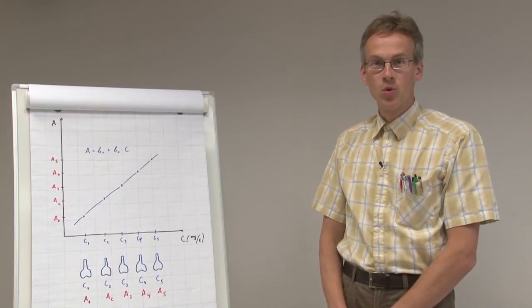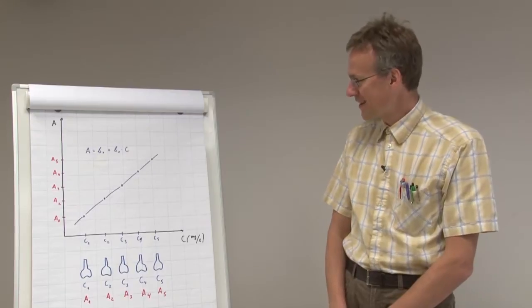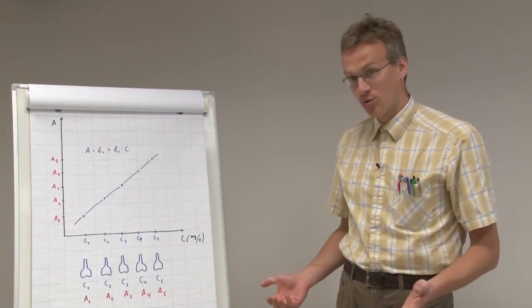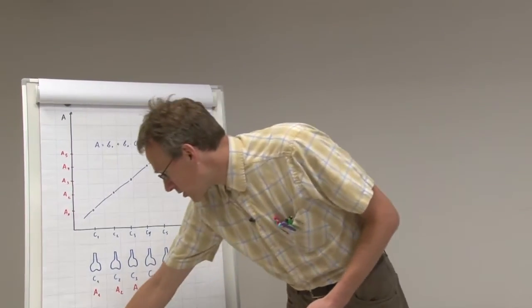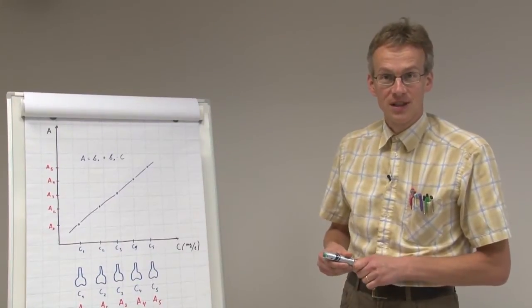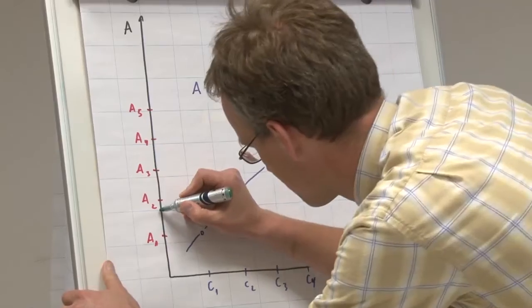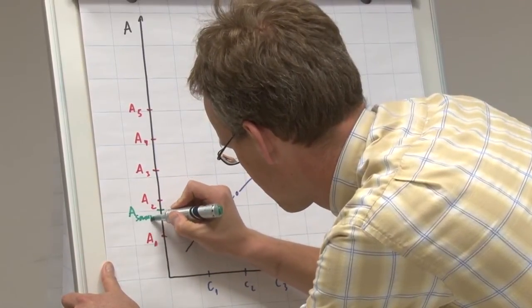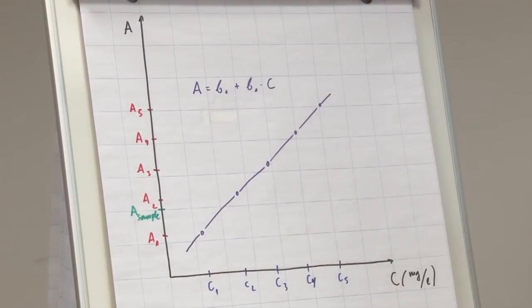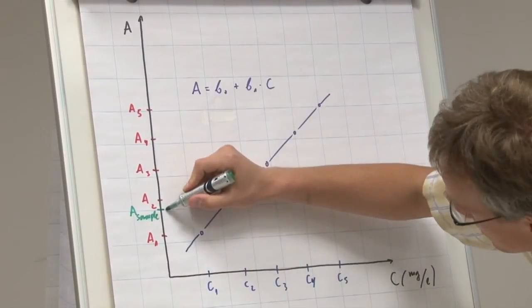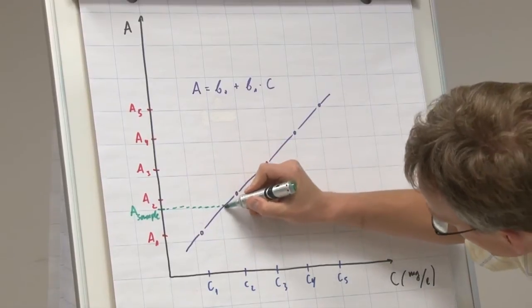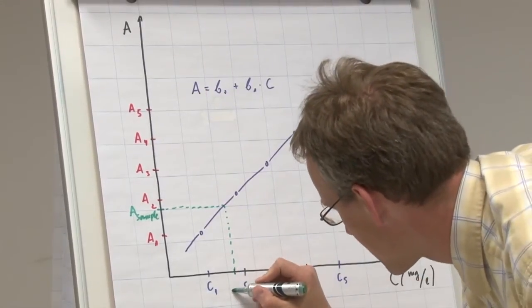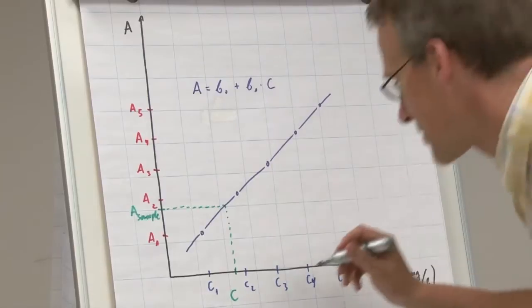And now, if we want to find from this calibration graph, the concentration of our sample, then how do we do? We have the absorbance value of the sample, let's say, here. And from this absorbance value, we can find the concentration in the sample solution.